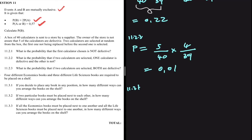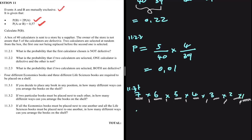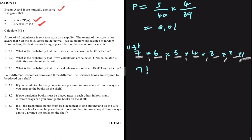Let's move to 11.3. We have four different economics books and three different life science books that are required to be placed on a shelf. For 11.3.1, if you can place any book in any position, how many different ways can you arrange the books? We have 7 books total. On the first slot you have 7 options, then 6, then 5, 4, 3, 2, 1 — this is simply 7 factorial.